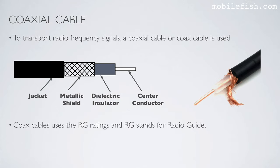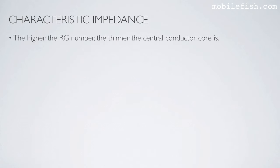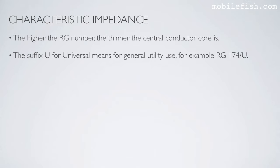Coax cables use the RG ratings, and RG stands for radio guide. The number after RG refers to different cable specifications, for example RG58, RG174, etc. The higher the RG number, the thinner the center conductor core is. The suffix U stands for universal, which means for general utility use, for example RG174/U.